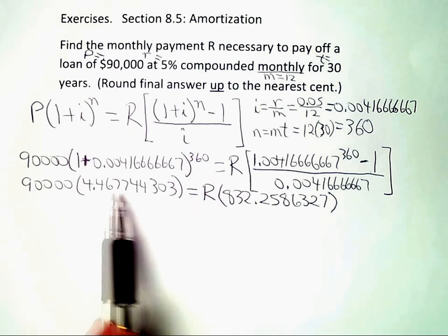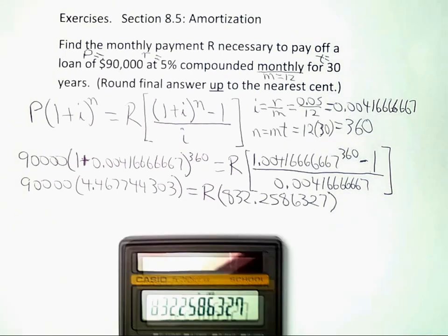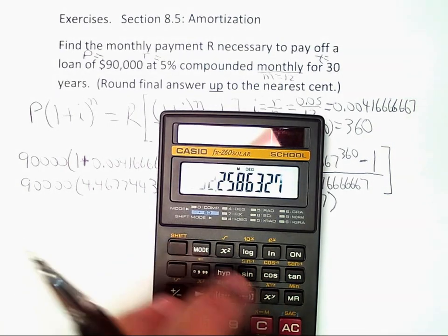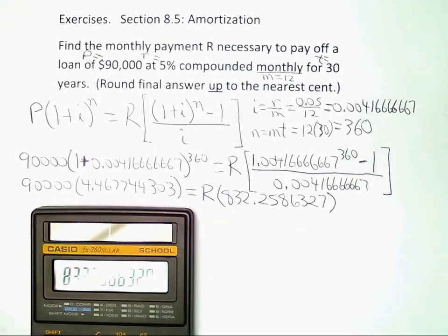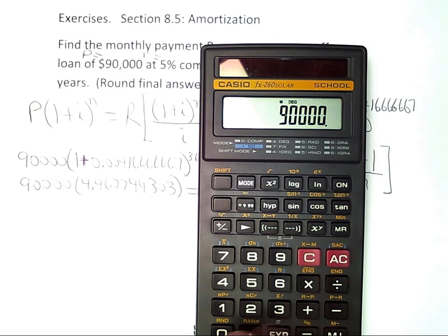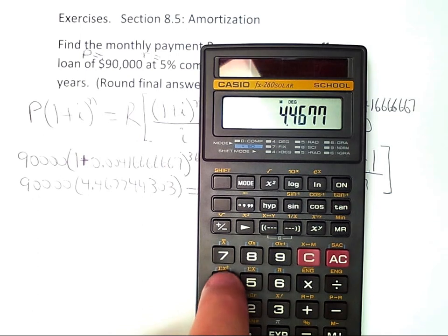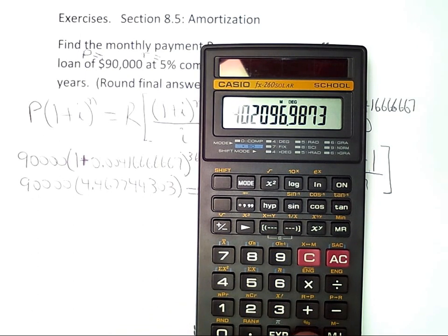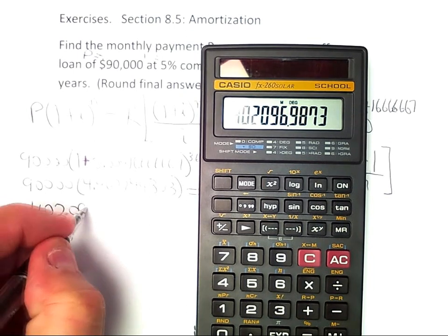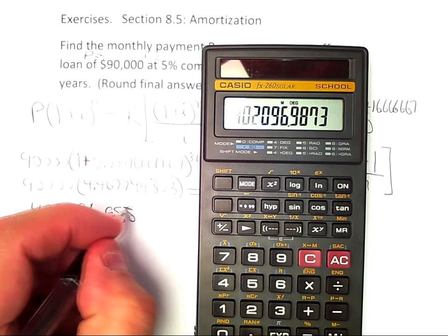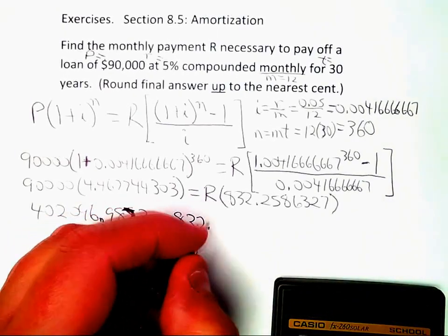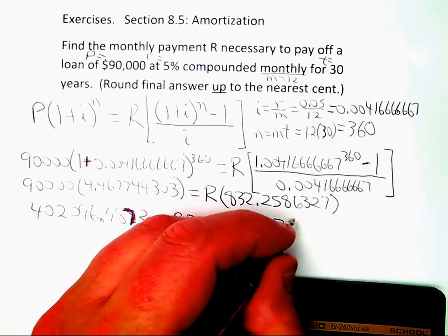And I'm practically home free now. All I need to do is multiply and divide. So if I multiply those two together, let me store that in memory. Let me do memory in for this number. And I'll multiply these two together, and if I clear, I get 90,000 times 4.467744303 equals, and that comes out to be 402096.98773. And that's equal to 832.2586327 times R.